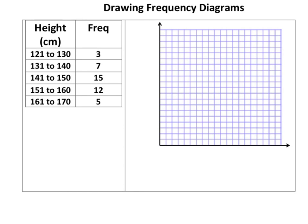I'm looking at drawing frequency diagrams with continuous data. This is continuous data because it's height, so one group moves on to the next and there's no gap between them.